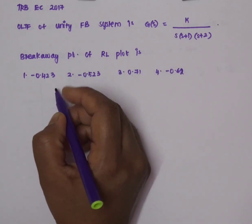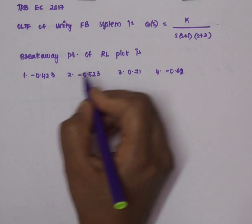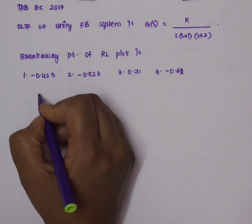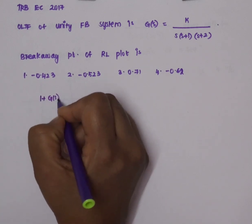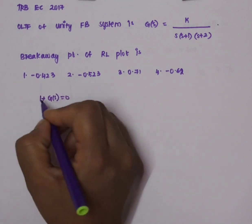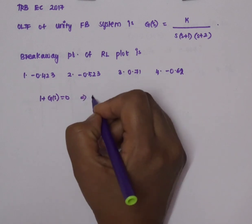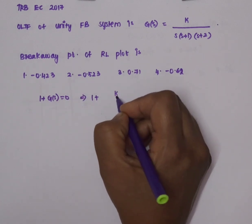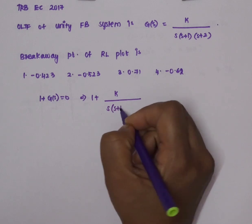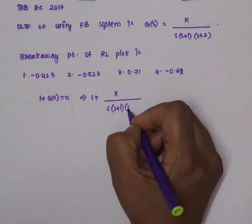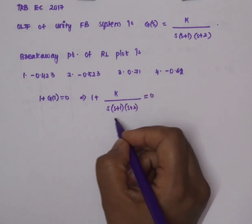To solve this, we have a formula. We start with 1 + G(s) = 0. We will rewrite it, substituting G(s): K divided by s(s+1)(s+2) + 1 = 0, so s(s+1)(s+2) + K = 0.